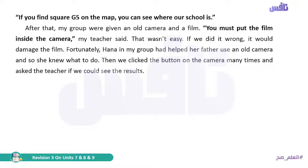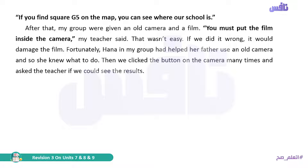The teacher said: you must put the film inside the camera. That wasn't easy. If we did it wrong, it would damage the film — another if-type 2 example. Fortunately means لحسن الحظ, and its opposite is unfortunately لسوء الحظ. If you add 'un-' before fortunately, it becomes unfortunately.